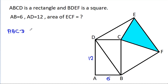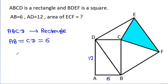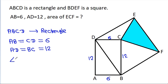So, ABCD is a rectangle. AB will be equal to CD, that will be 6. And AD will be equal to BC, that will be 12. So CD is 6 and BC is 12.